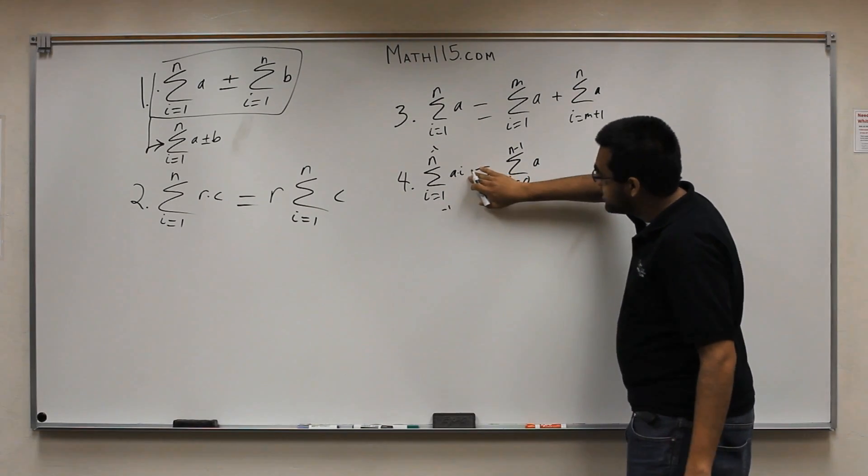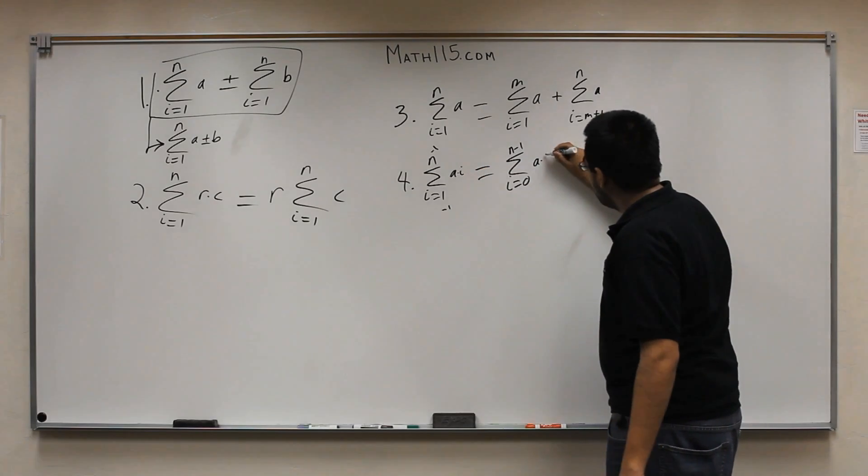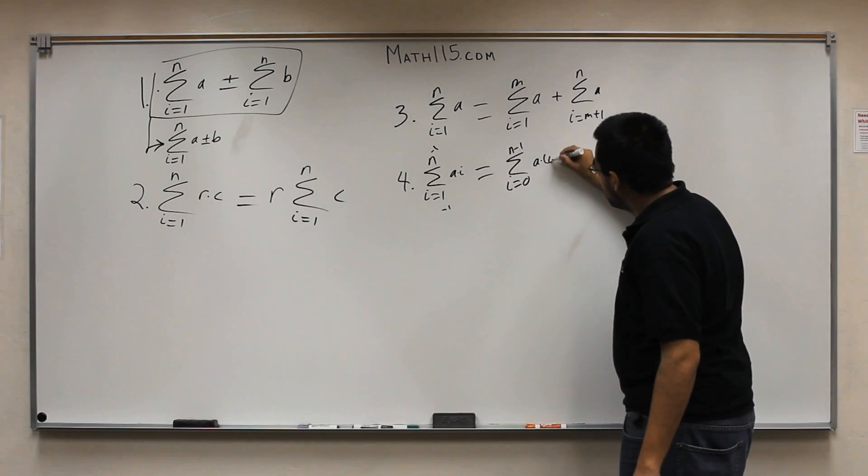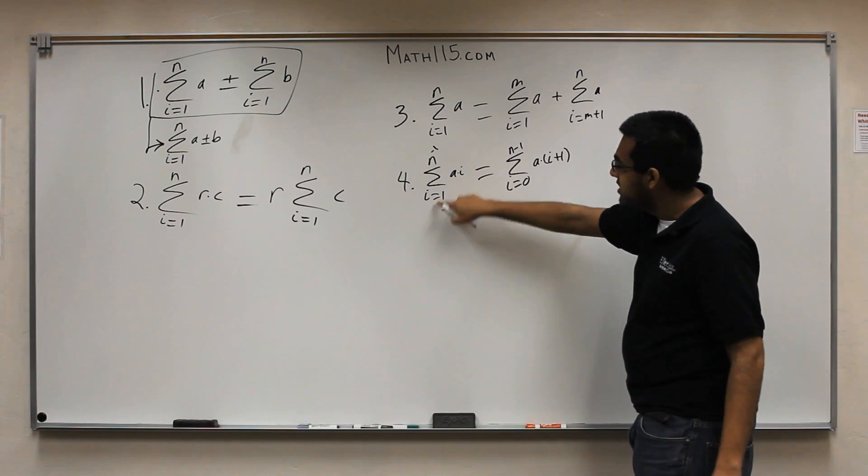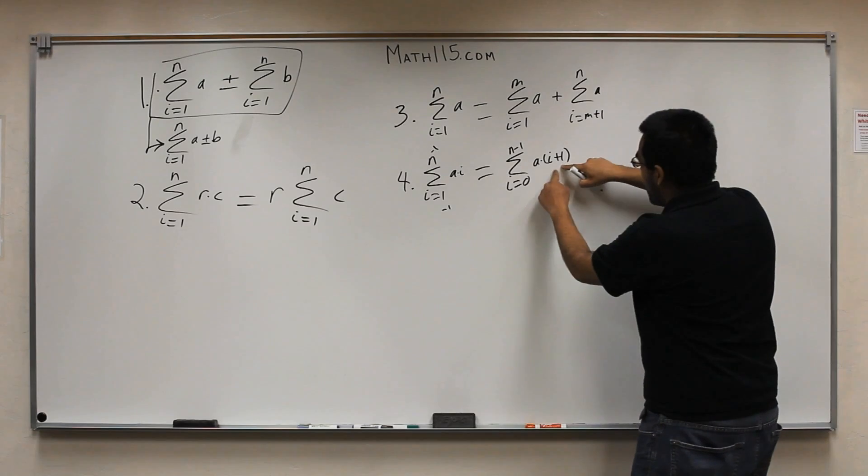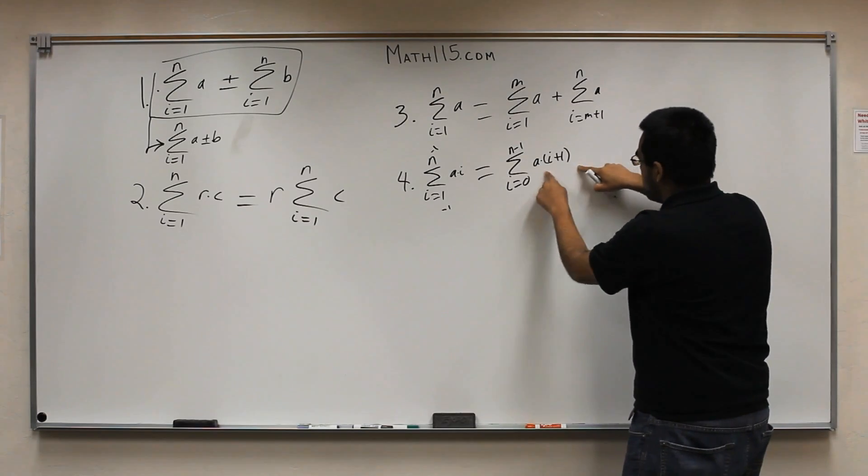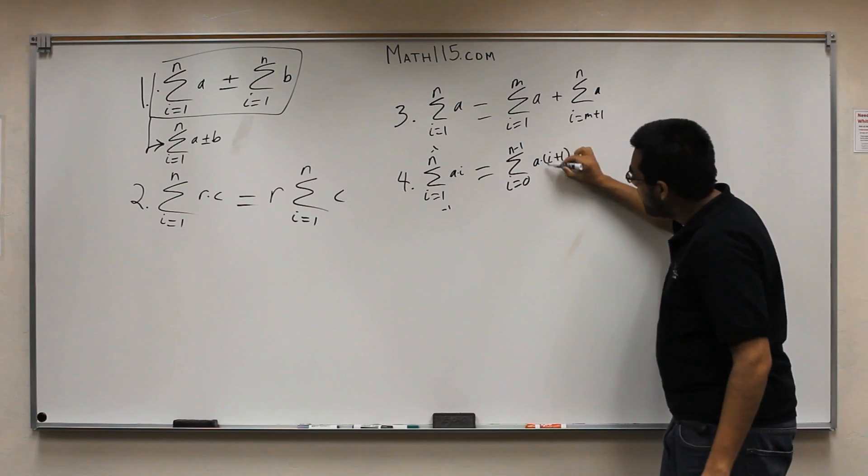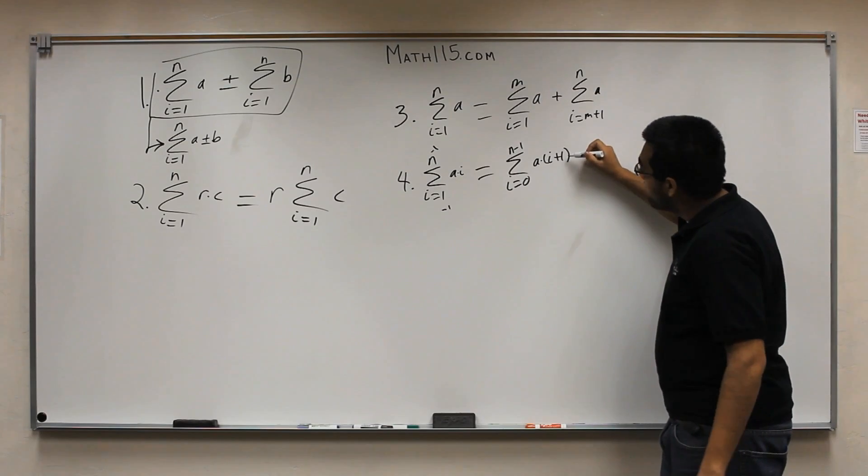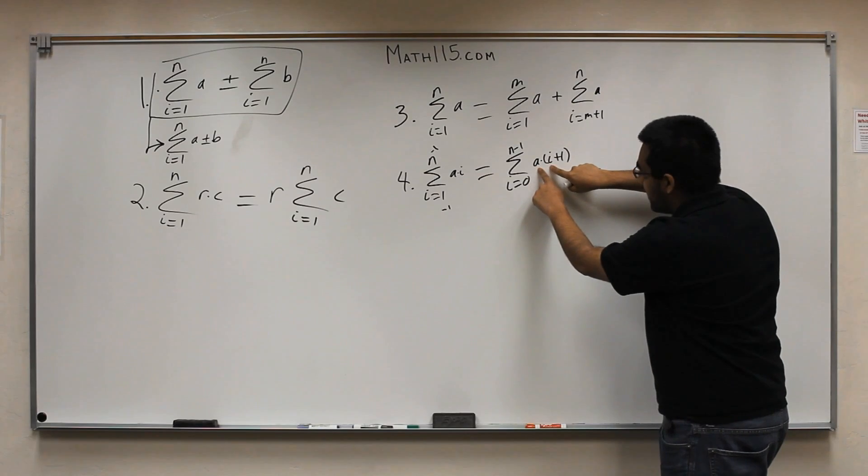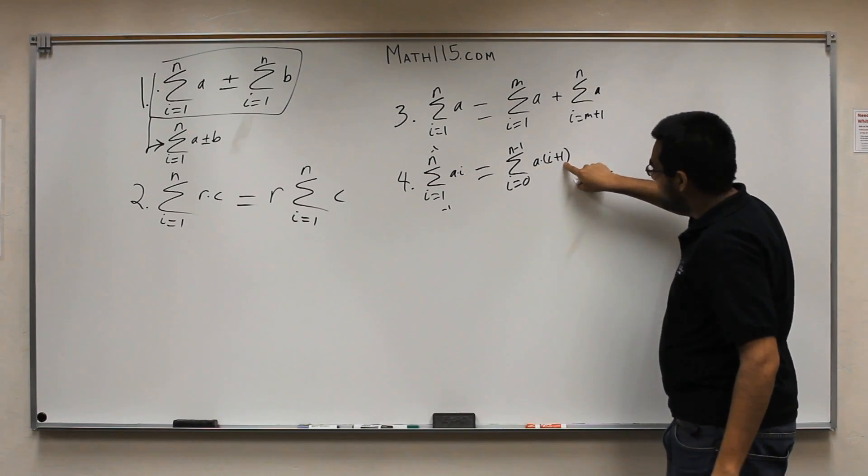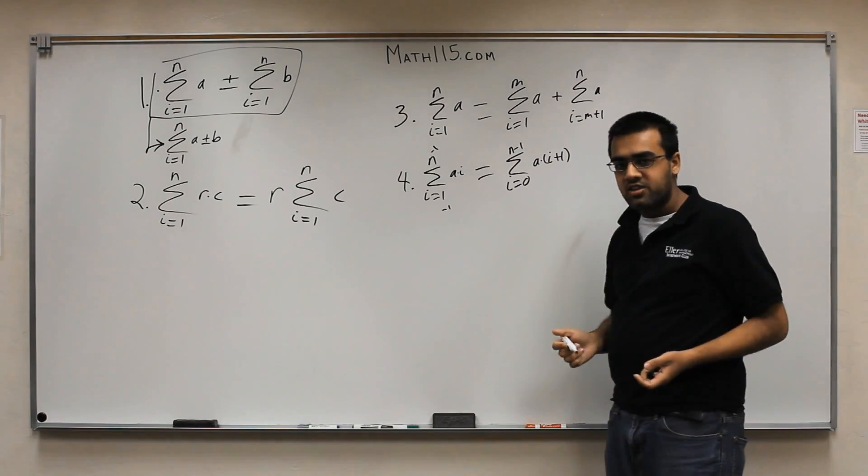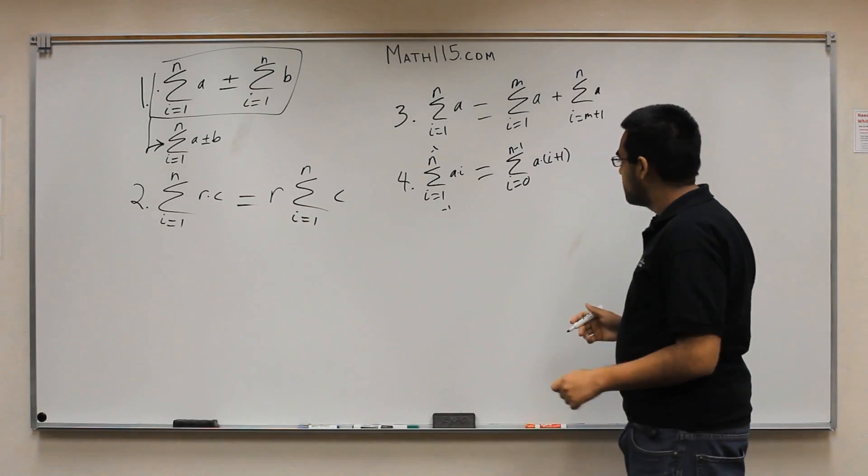And what you have to do here is, wherever you see a variable in the original part, right here, wherever you see a variable, if you subtract here, you have to add to the variable here. So, this now becomes a, open parentheses, i plus 1. Since we subtracted 1 here from the indexes, we have to add 1 to the actual inside portion of this summation. So, remember, it's important to have the parentheses, because you're adding 1 to the variable. You're not adding 1 to the multiplication of a times i. So, what you have to do, is you have to do a times i, and then a times 1, as well, and add those two answers together. So, it's very important to know your order of operations when you're doing this.